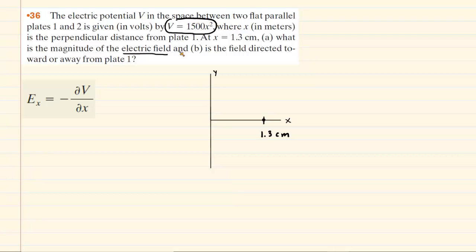The key idea to doing that is to understand that the electric field along the x direction is going to equal the negative of the partial derivative of the electric potential with respect to x.